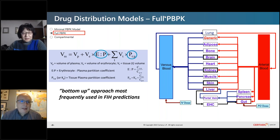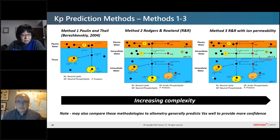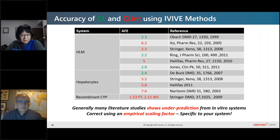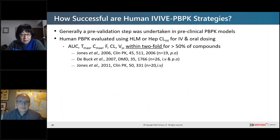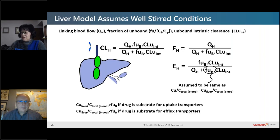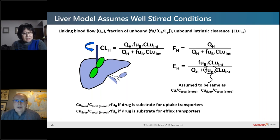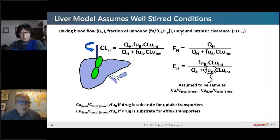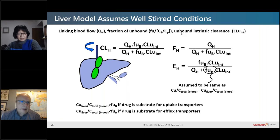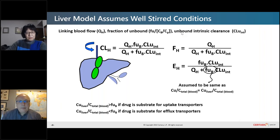On whether hepatic clearance calculation is available for all species: yes — for any species where you have in vitro data (mouse, rat, monkey, or human), you can make clearance predictions. The basic principle is the same across species, but the scaling factors and intrinsic clearance values will differ, and all of that is taken into account within Simcyp Discovery.